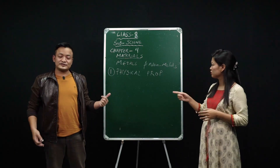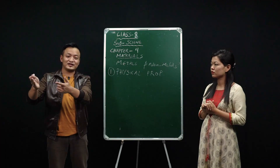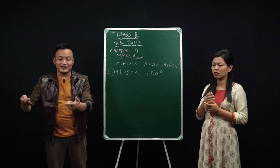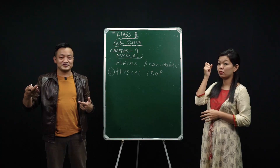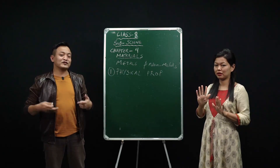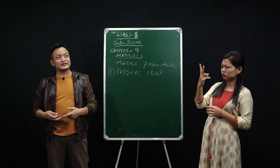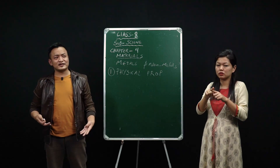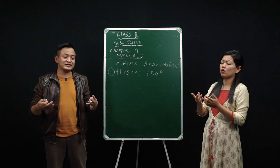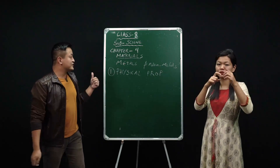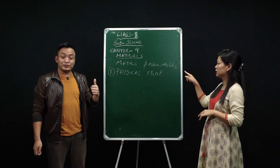What is physical property? Physical property means just by looking at something and understanding it — you observe it and make a conclusion. For example, you just look at a tree outside and say 'oh, this is a tree.' That's what physical property is like. So now under physical property, first let's study about appearance.